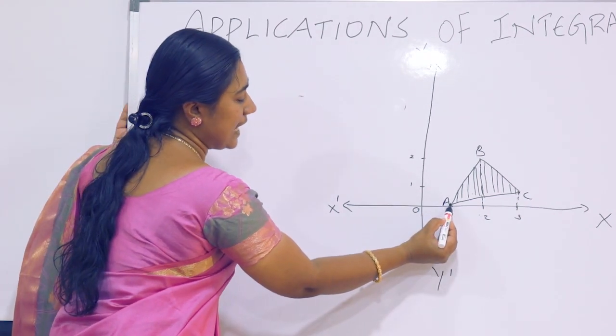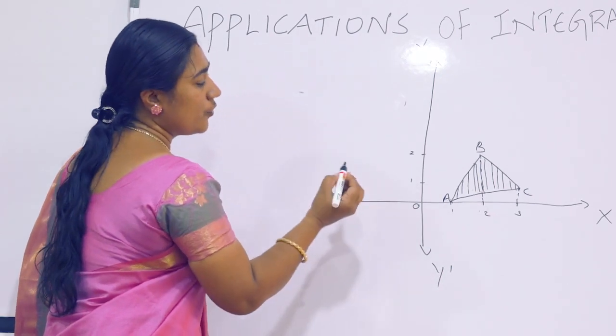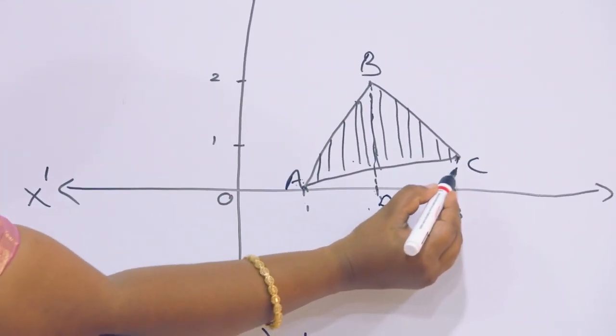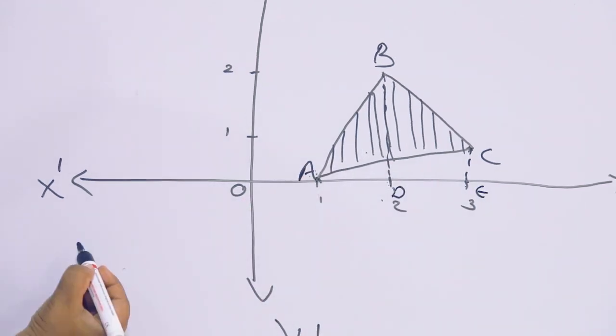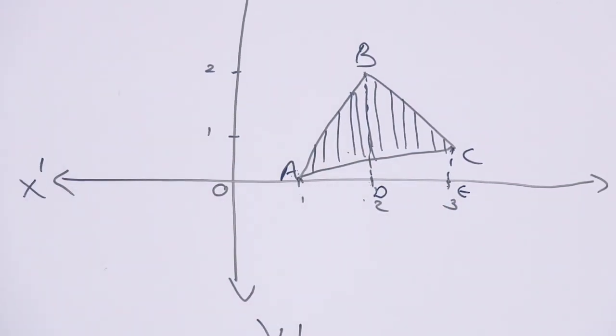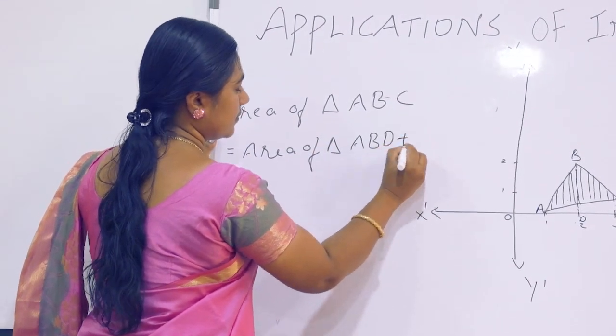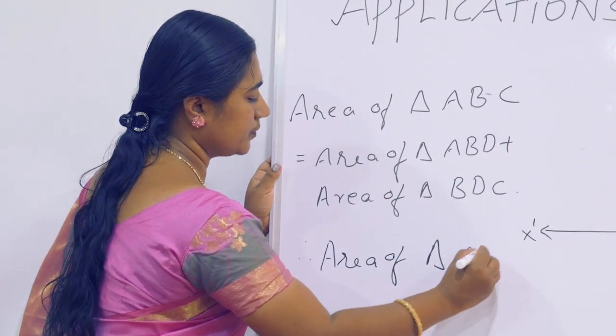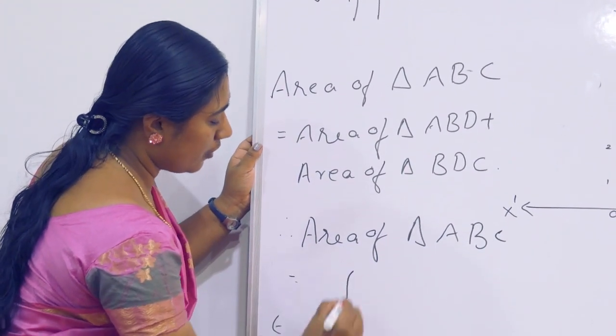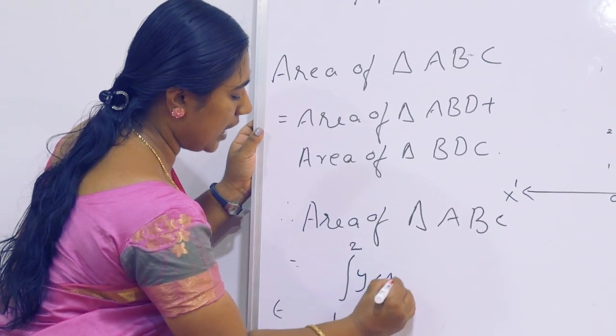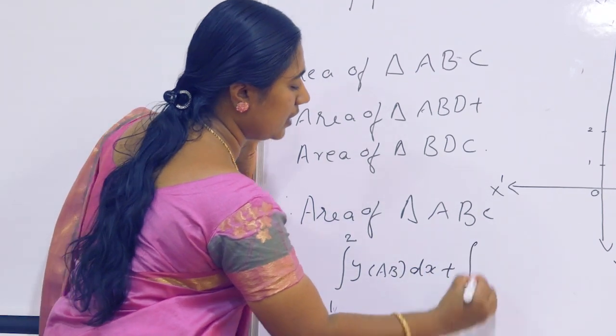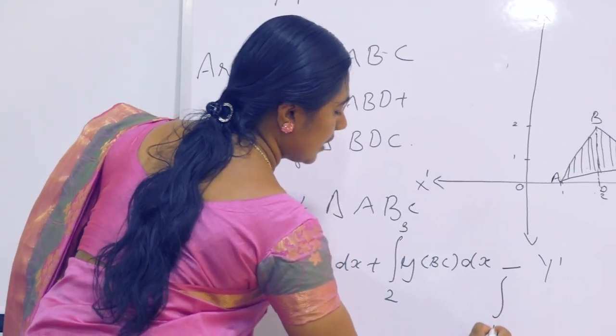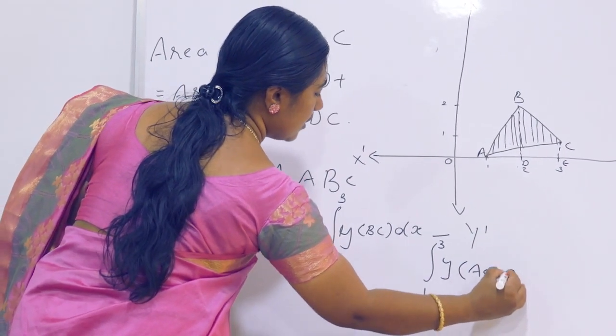For finding equation of line AC, the limits are 1 to 3. Area of triangle ABC equals area of triangle ABD plus area of triangle DBE minus area of triangle ACE. Area of triangle ABC equals integral 1 to 2 of AB dx plus integral 2 to 3 of BC dx minus integral 1 to 3 of AC dx.